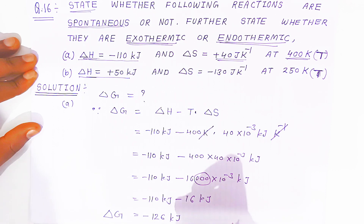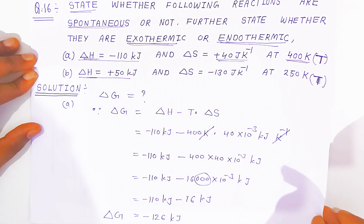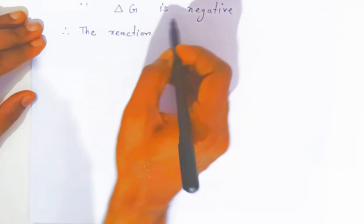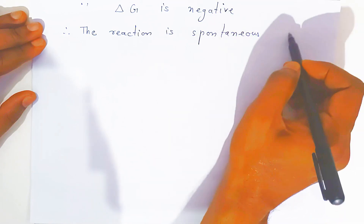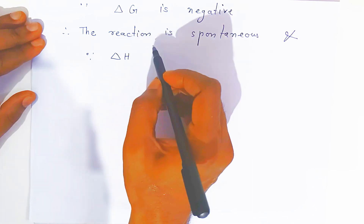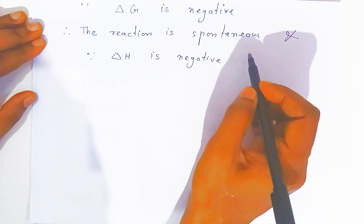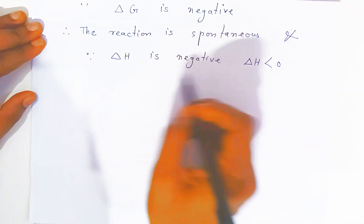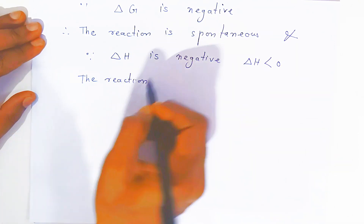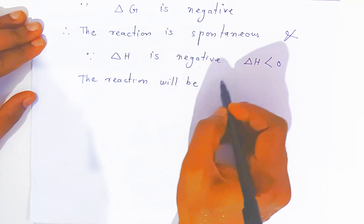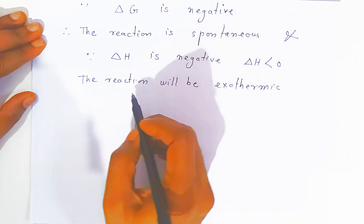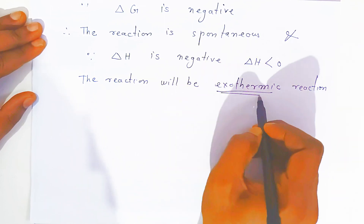Since change in Gibbs energy is negative, this will be a spontaneous reaction. The reaction, if the value is given this, the reaction will be spontaneous — the reaction will take place automatically. Since ΔG is negative, therefore the reaction is spontaneous. And since ΔH value is given minus 110 kilojoule, so it is negative — less than zero. So the reaction will be exothermic, meaning the system is giving out heat. Therefore it is called spontaneous and exothermic reaction.